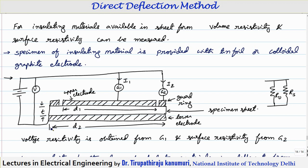On the upper side, only a central portion of diameter D1 is provided with the upper electrode, which is connected through galvanometer to the positive terminal of the supply. On both sides, leaving a gap, small electrodes are provided. Because it is circular, one circular ring-type guard ring is provided on the upper side — that is why it is called a guard ring. This guard ring is connected through galvanometer 2.